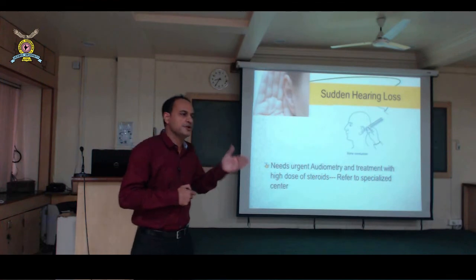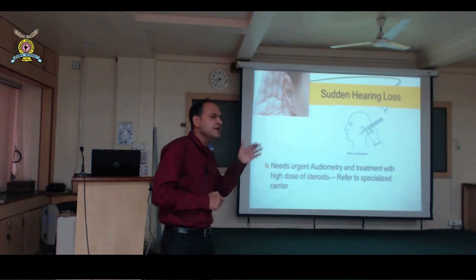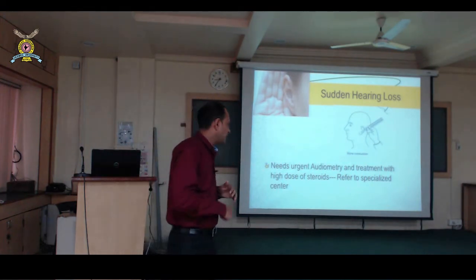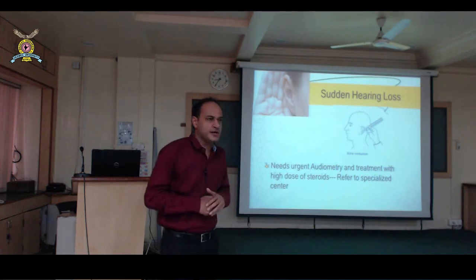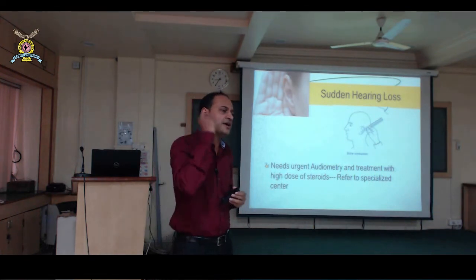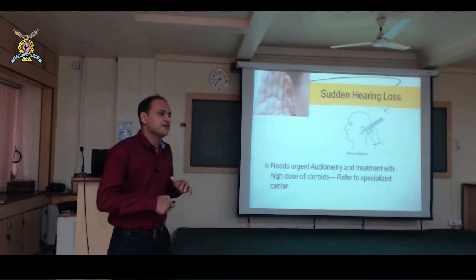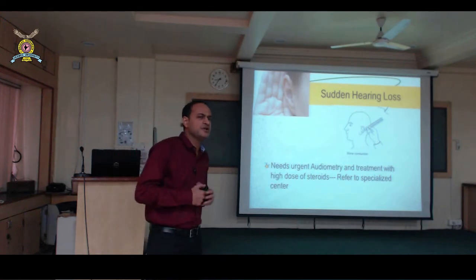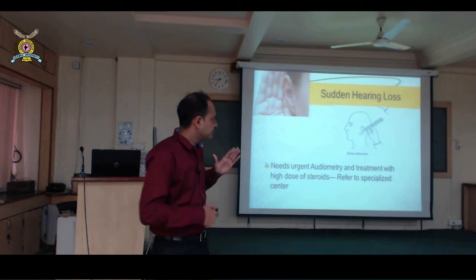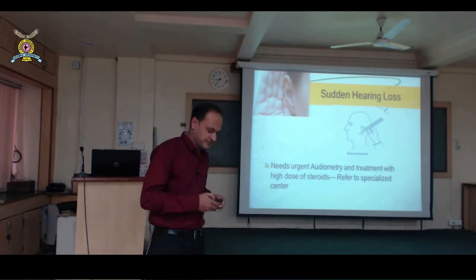If a patient comes with sudden hearing loss and tuning fork on the mastoid confirms poor hearing, refer promptly. We will do audiometry — the criterion is at least 30 dB of neural hearing loss. The patient needs high-dose steroids, a course of acyclovir, and sometimes intratympanic steroids. This condition is totally recoverable if proper treatment starts within 3 to 4 days — it should be treated as an emergency.